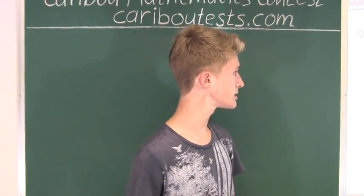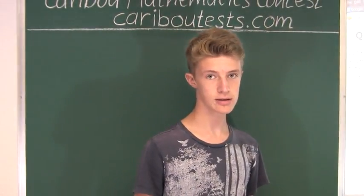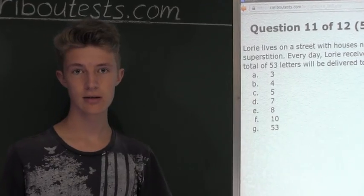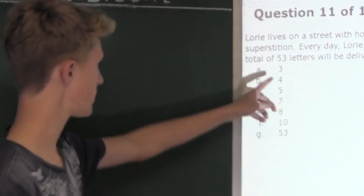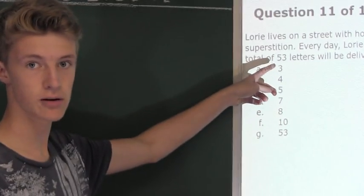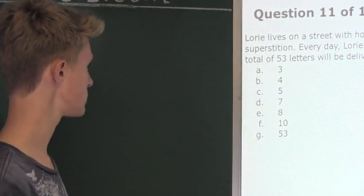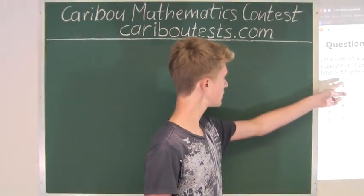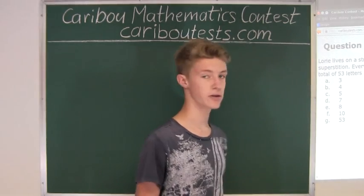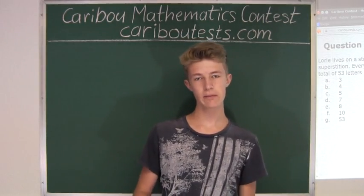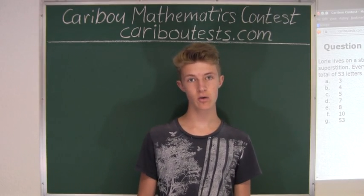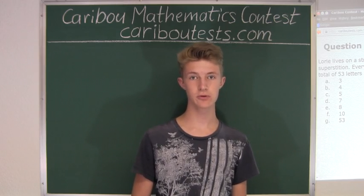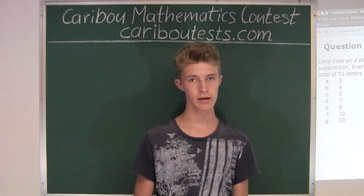What we are wondering is what the least number of letters that Lori can receive to still fulfill these conditions. Since we want the least number, we will start off by looking at the lowest number possible in the solutions. And that would be 3. So we are going to say that Lori received 3 letters in the mail today. Since Lori must receive more and not equal to any of the other houses, all the other houses can only receive maximum 2, not 3 or more.